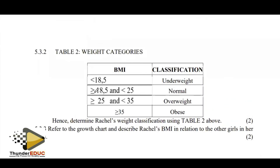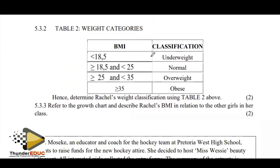For question 5.3.2, using Table 2, we classify the answer and determine Rachel's weight classification. Her BMI lies on the 50th percentile at 21 kg/m². Using the table, the health status is normal — it's in between 18.5 and 21, so the classification is normal.